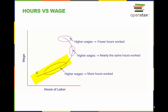The middle, nearly vertical portion of the labor supply curve shows us that as wages increase over this range, the quantity of hours worked changes very little.